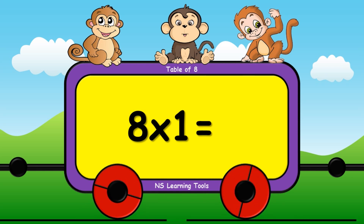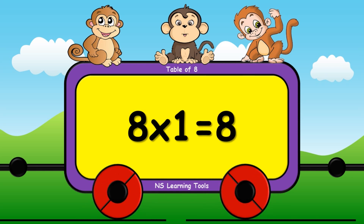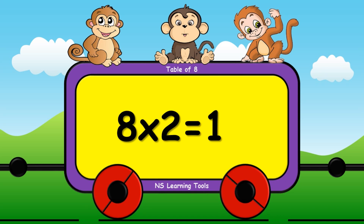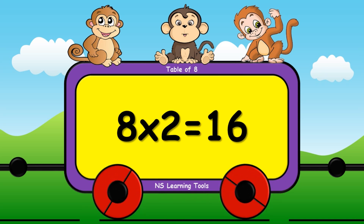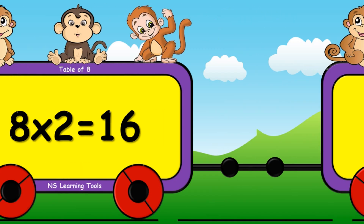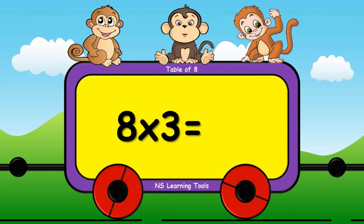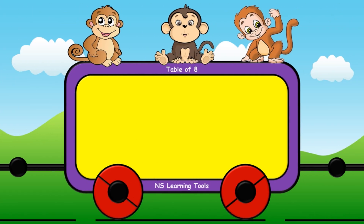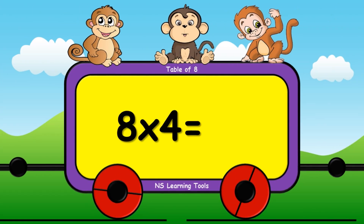Eight ones are eight. Eight twos are sixteen. Eight threes are twenty-four. Eight fours are thirty-two.